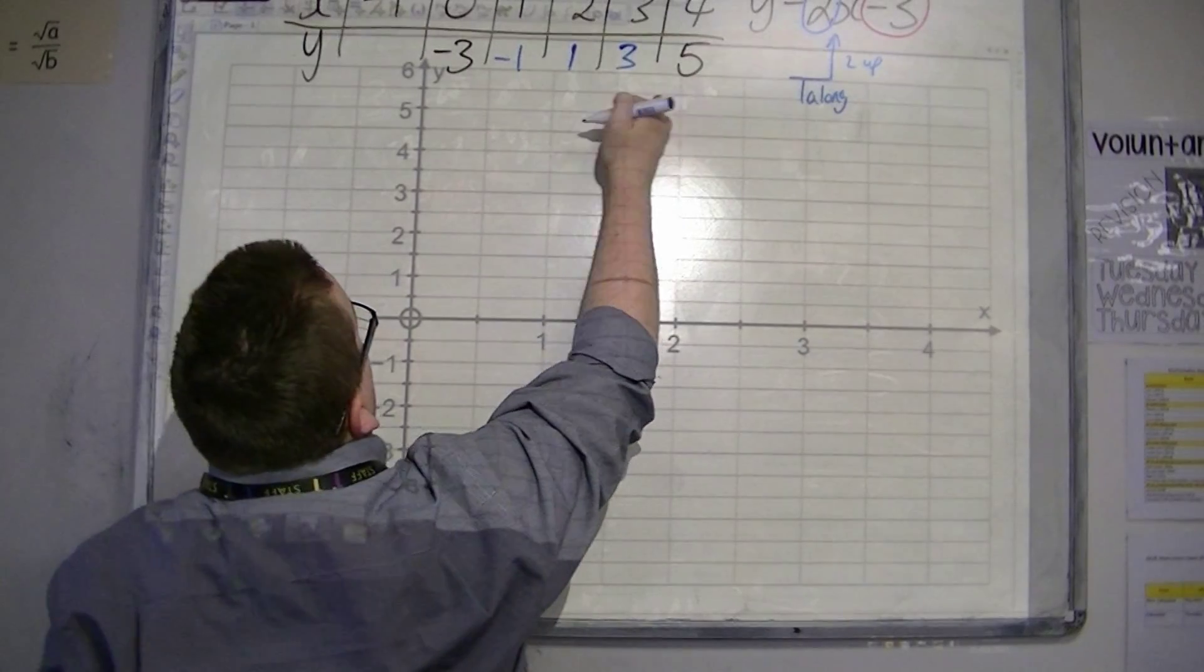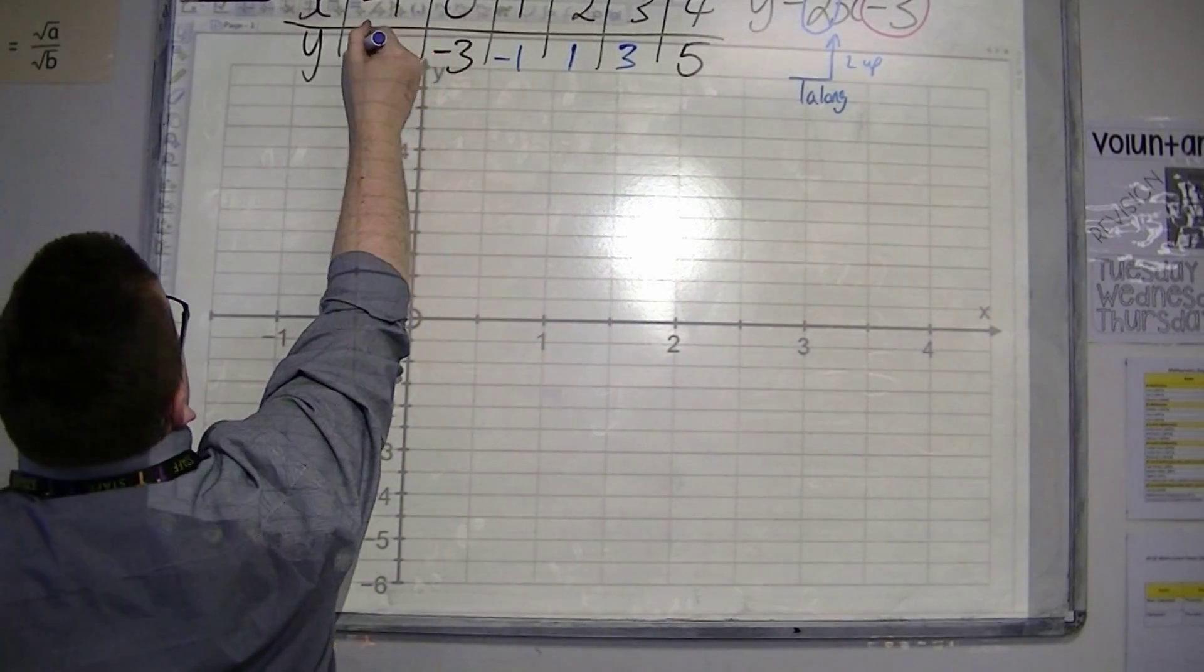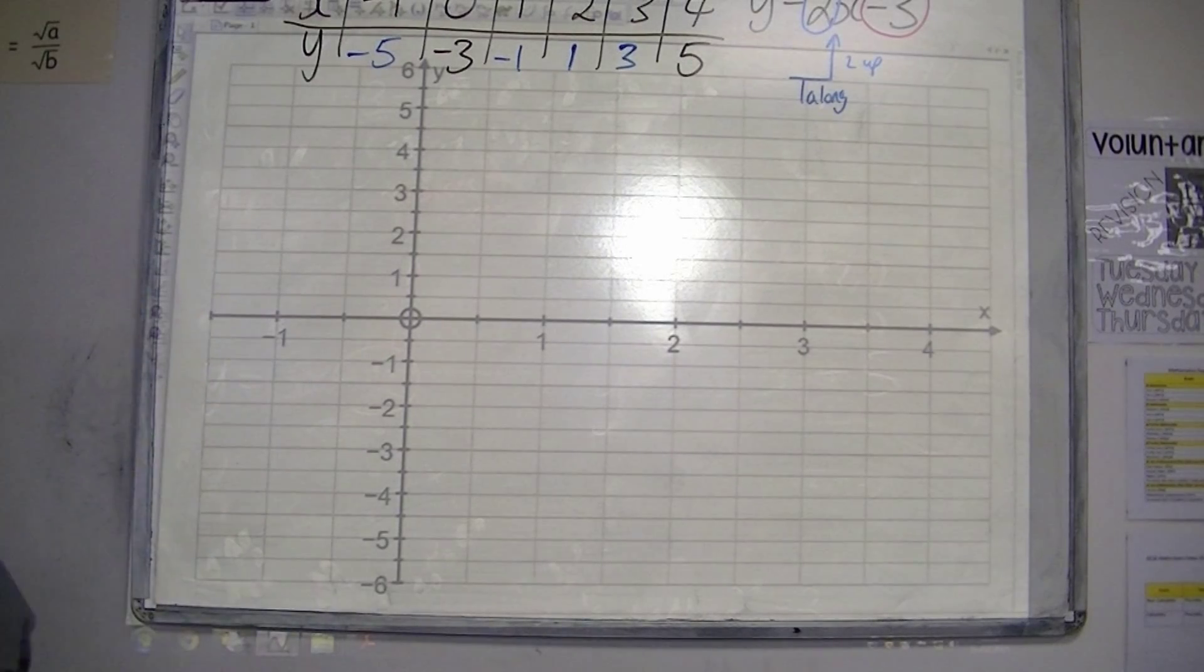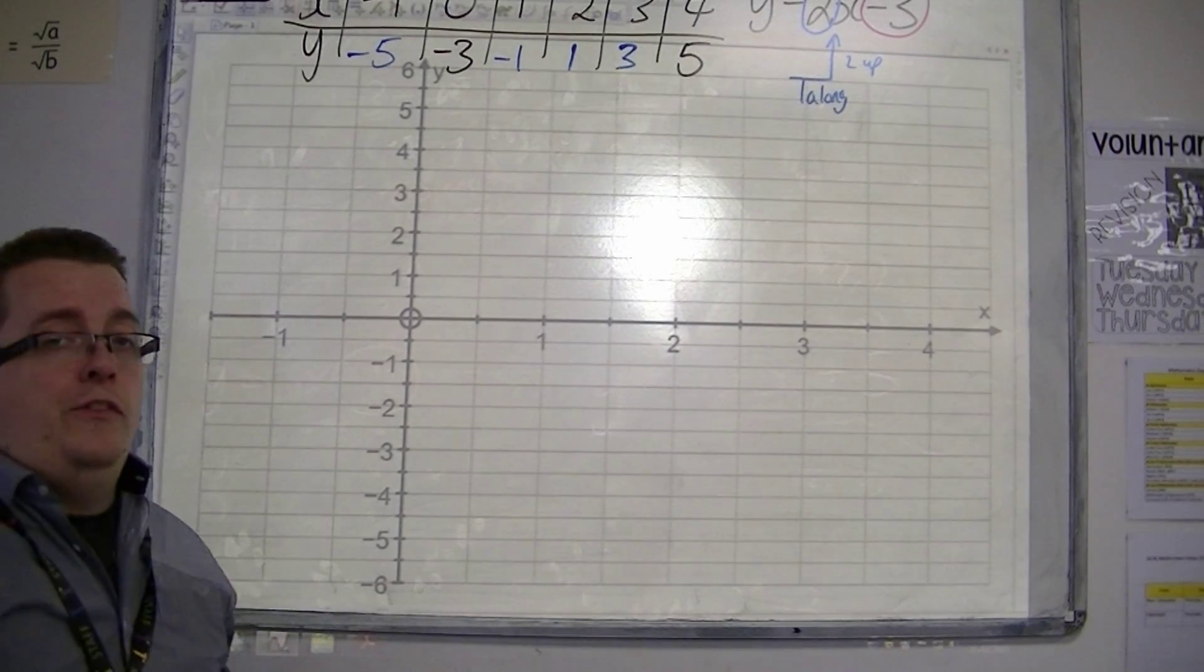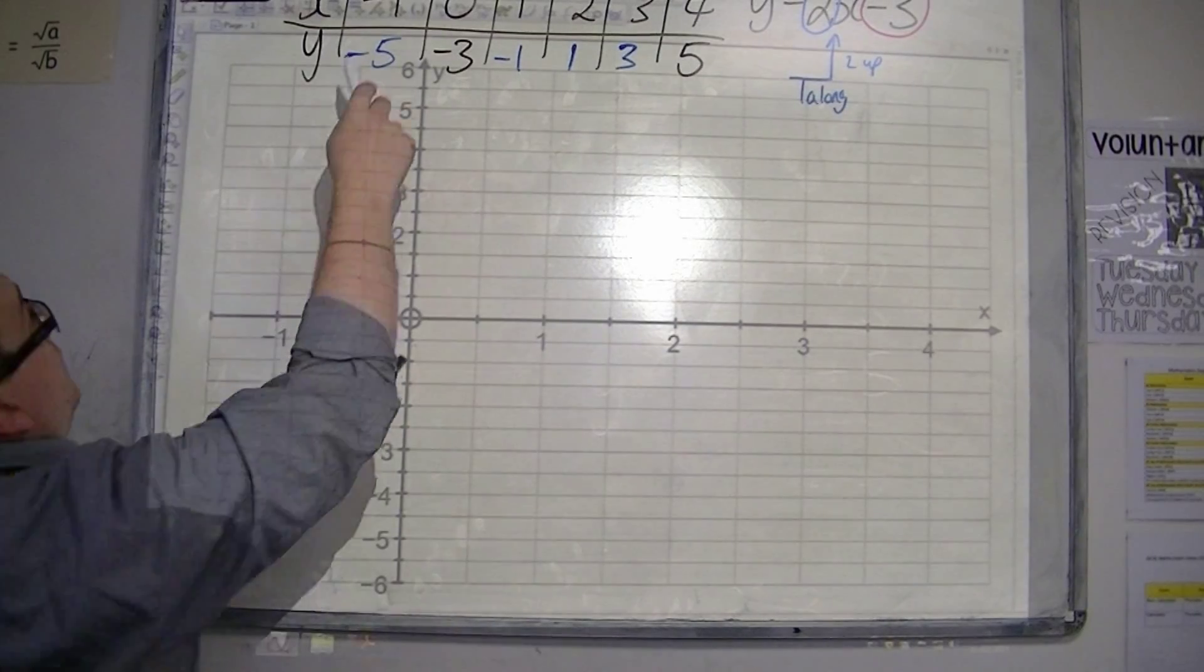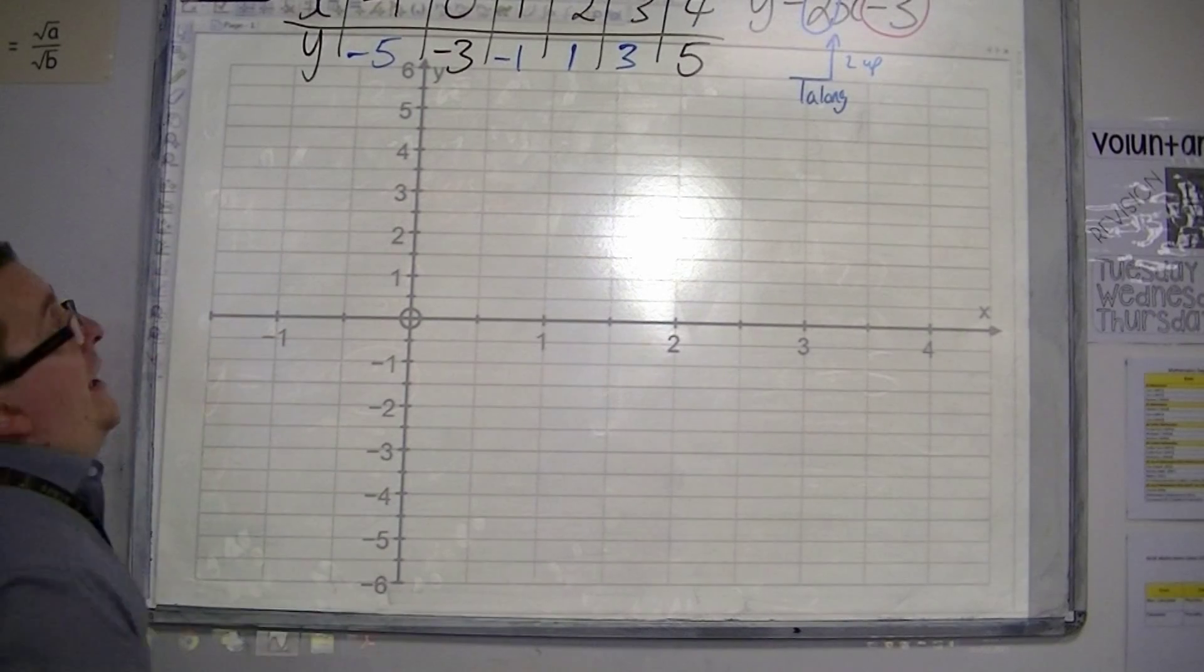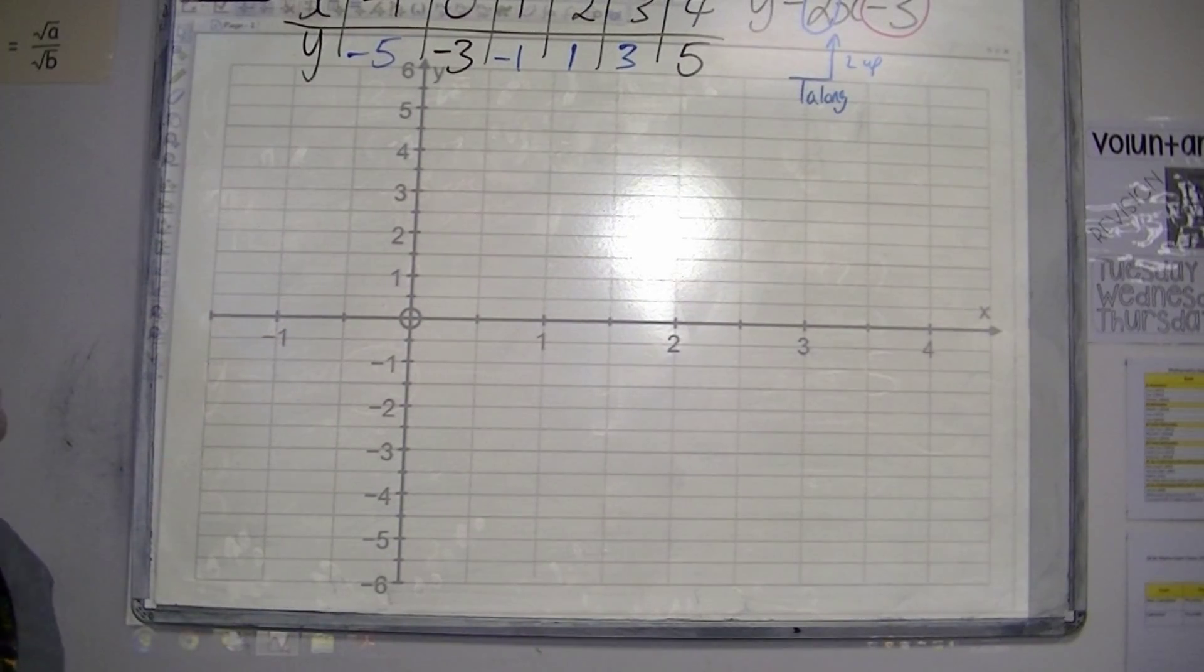And you can reverse process it. So minus 3 take away 2 will be minus 5. And that's how you can fill in the rest of the table. Each of these columns now is a coordinate, a pair of coordinates.